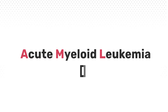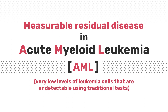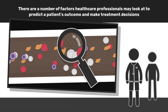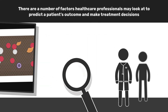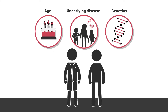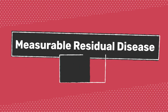In acute myeloid leukemia, measurable residual disease is the term given to very low levels of leukemia cells that are undetectable using traditional tests. At the time of AML diagnosis, there are a number of factors a healthcare professional may look at to predict a patient's outcome and to make treatment decisions. These include age, underlying disease, and genetics. Although these characteristics help to paint a picture of what a patient's future may look like, outcomes still vary. A more advanced approach is to assess measurable residual disease, or MRD.